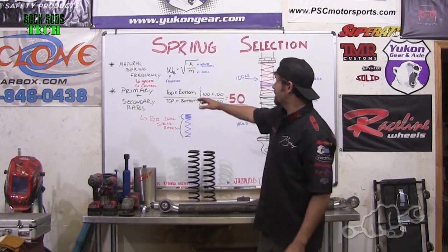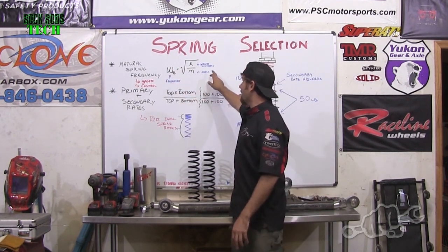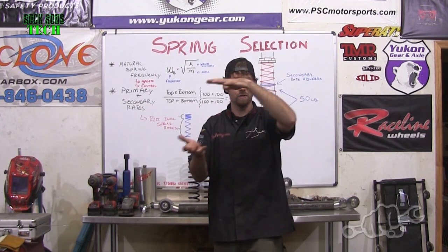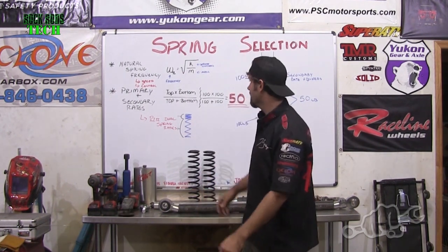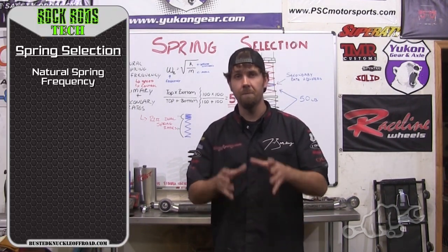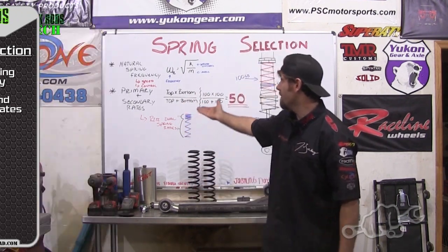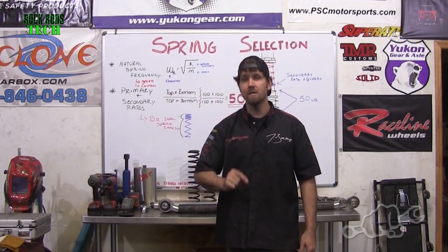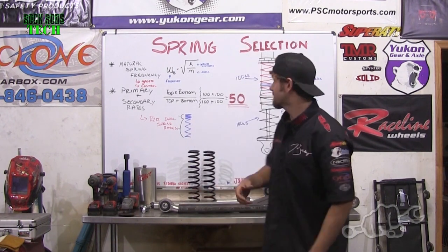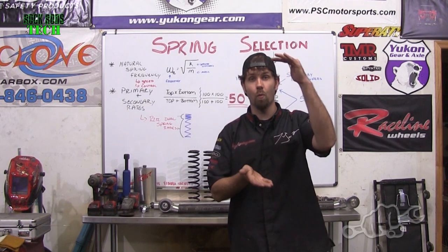The mass of your vehicle is what's sitting on top of the spring, and the spring selection changes depending on how much mass you're putting on it. The next thing to talk about is primary and secondary rates. The calculation for spring frequency gives you your primary rate — that's your top spring and bottom spring combined if you have a dual rate coilover system.